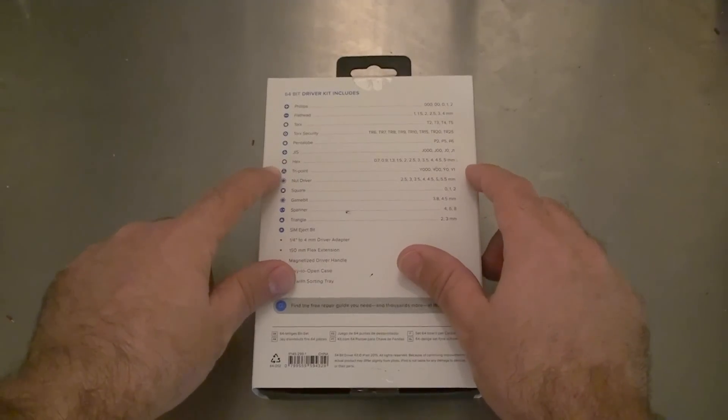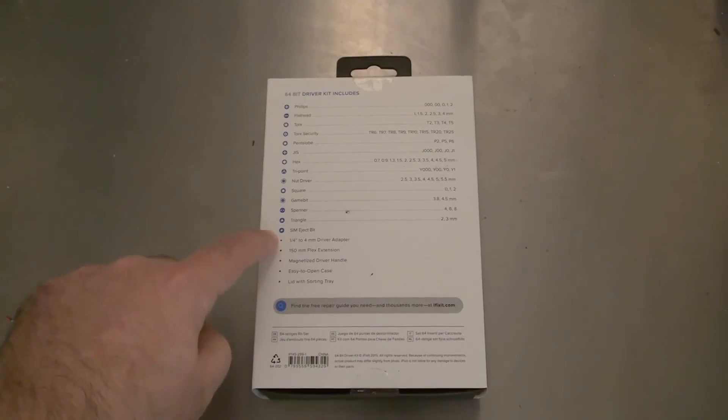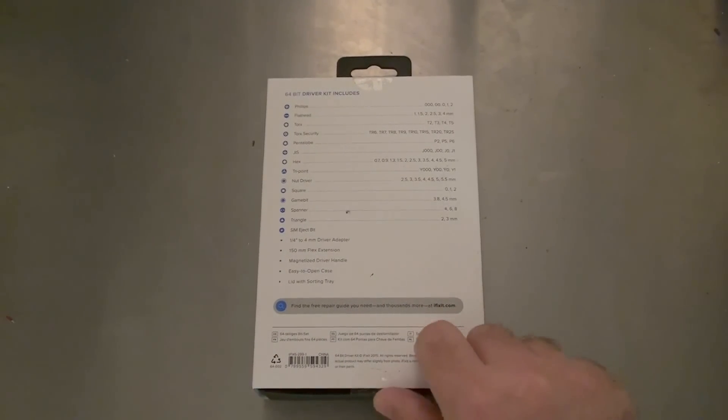Pentalobe, JIS, Hex, TriPoint, Nutdriver. Square, Gamebit, Spanner, Triangle, SimEject bit, which is always nice. Then there's a driver extension adapter, the 150 flex extension, which I'm looking forward to playing with, the magnetized driver handle, and the easy-to-open case, and the lid as a sorting tray, which is another pretty cool feature.